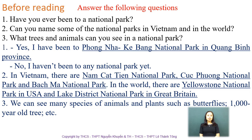Here are some suggested answers that can help you. For the first one, there are two ways to answer it. If you say yes, you can say: 'Yes, I have been to...' then add the name of the national park. For example: 'Yes, I have been to Phong Nha Kẻ Bàng National Park in Quảng Bình province.' If you say no, you can say: 'No, I haven't.' Or: 'No, I haven't been to any national park yet.'